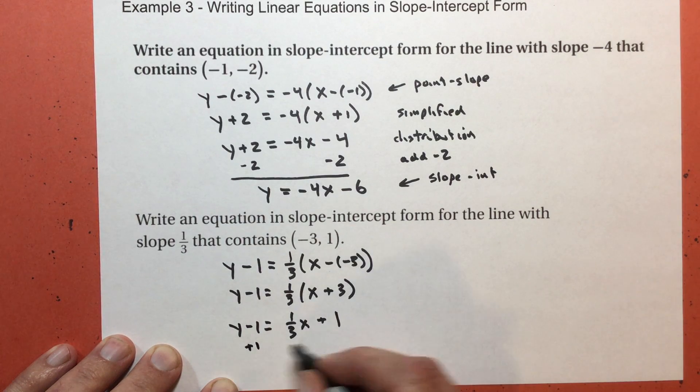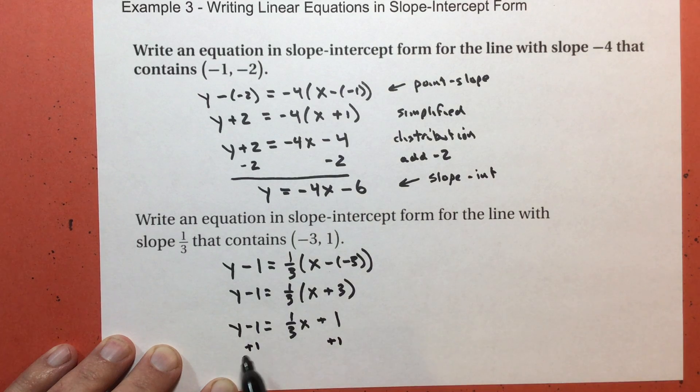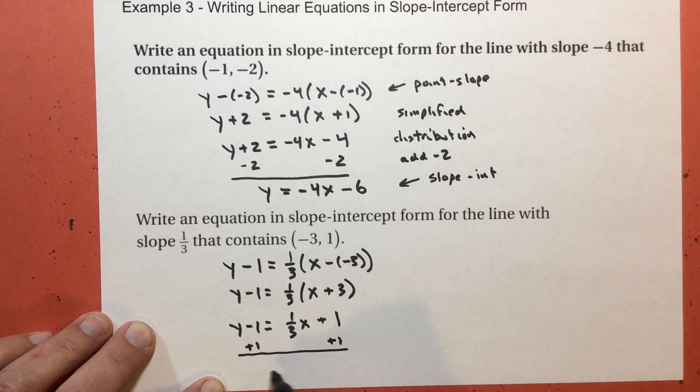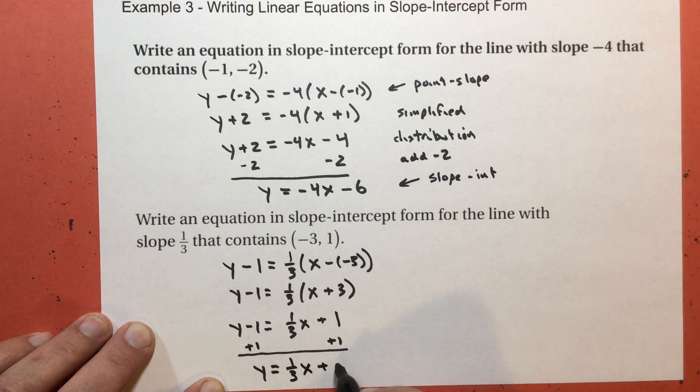Now, I'm going to add 1 to both sides. And I'm kind of out of, well, maybe I can still squeeze it in there. Put it way here at the bottom. I thought I was going to run out of room and put it over here, but I think I'm okay. Y equals 1 third x plus 2.